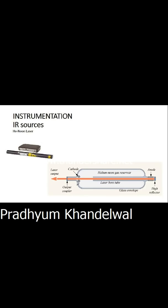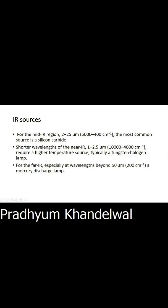Now we will start with instrumentation. Here we use an infrared source, specifically a helium-neon laser. Infrared sources may vary: silicon carbide is used for the mid-IR region, a tungsten halogen lamp is used for shorter wavelengths, and a mercury discharge lamp is used for far infrared regions.